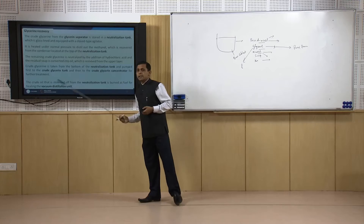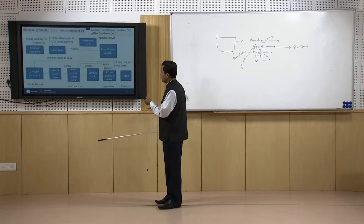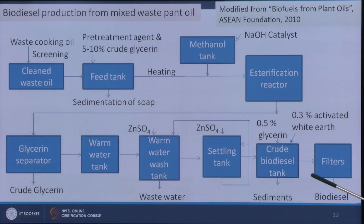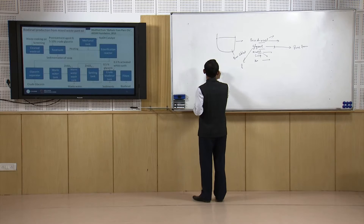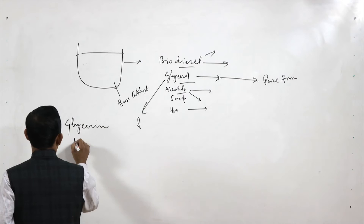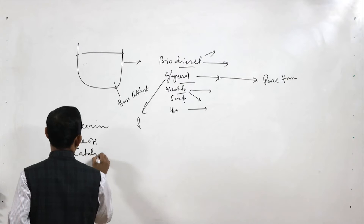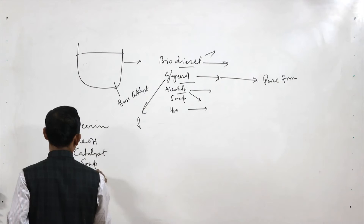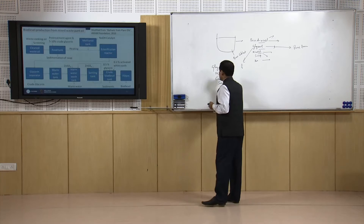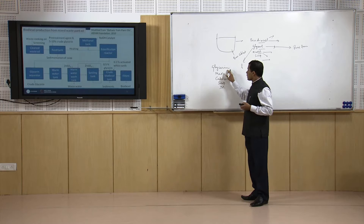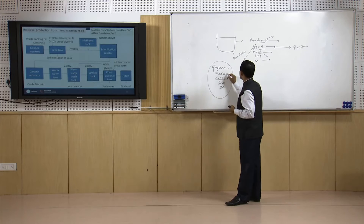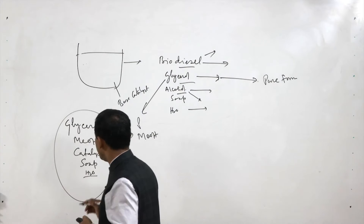Moving to glycerin recovery: in the flow sheet we get a glycerin-containing stream whose composition includes glycerin, methanol, catalyst, soap, and possibly some moisture from the feedstock. To purify this crude glycerin, the mixture is heated so that methanol is driven off first. Then the catalyst and soap and water need to be separated.